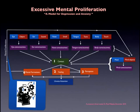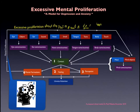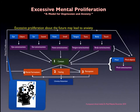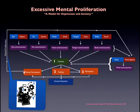This is a clinical model: excessive mental proliferation can lead to depression and anxiety. For example, if you proliferate excessively about the past, this may lead to depression. Similarly, if you excessively proliferate thoughts about the future, this may lead to anxiety. This is one way we can apply this model to a clinical scenario.